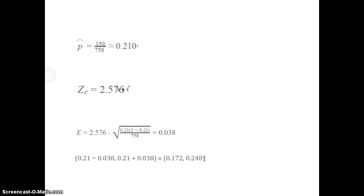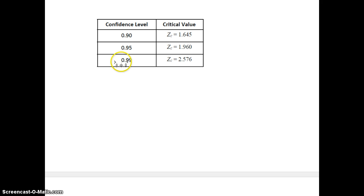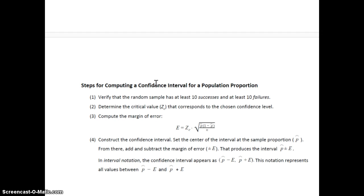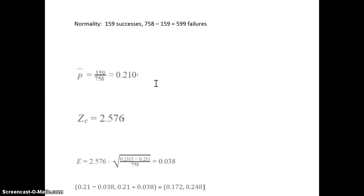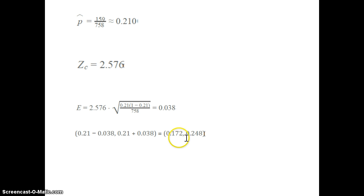For a 99% confidence interval, the z-critical value is 2.576. The margin of error is 2.576 times the square root of 0.21 times (1 minus 0.21) over 758, where 0.21 is p-hat. The margin of error equals 0.038. The confidence interval is p-hat minus the margin of error to p-hat plus the margin of error. So we're 99% confident that the true population proportion of college students who believe aliens have visited Earth is between 17.2% and 24.8%.